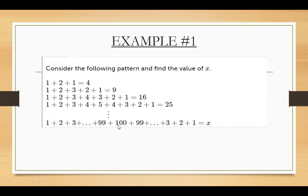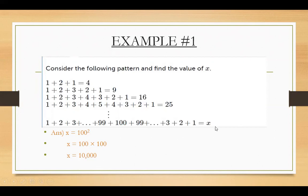So what we have to do? We need to find the square of 100 to get the value of x. You know how to find the square. x is equal to 100 squared. 100 squared means you multiply 100 by 100 and you get 10,000. So the value of x in example number 1 is 10,000. That is our answer.